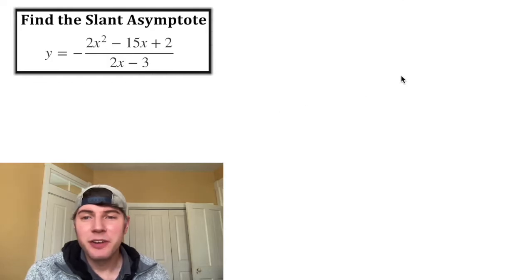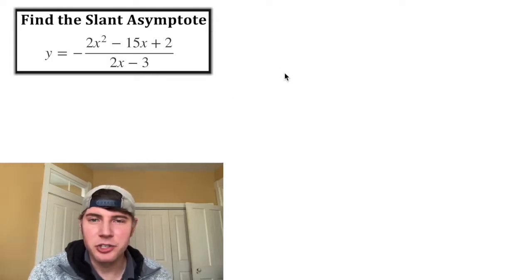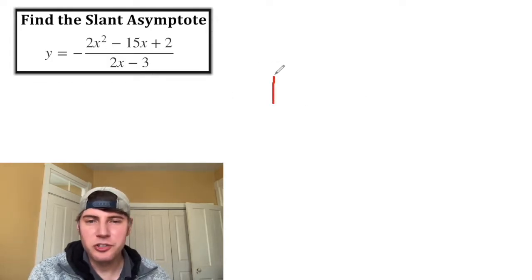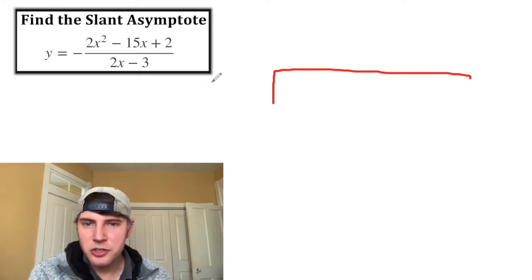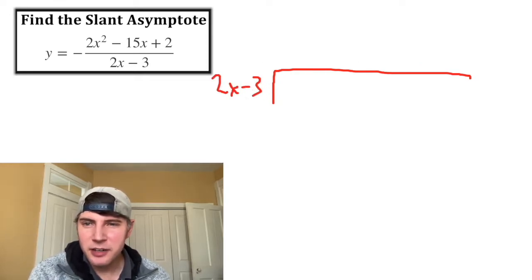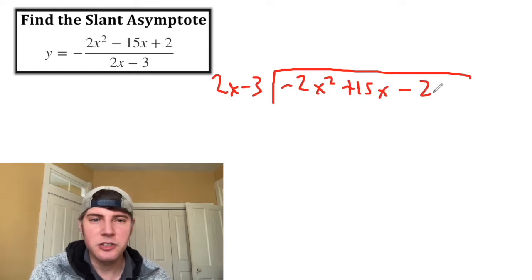A good way to find it is long division and then dropping the remainder. First, let's draw the long division bar. The 2x minus 3 will be on the outside, and on the inside we're going to have this expression, but we need to distribute the negative. So it's going to be negative 2x squared plus 15x minus 2.